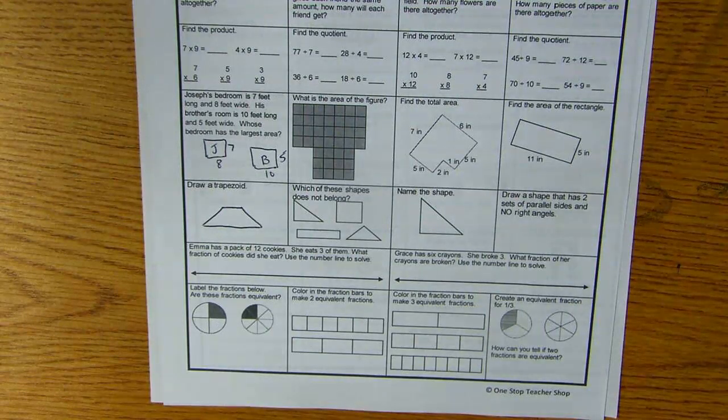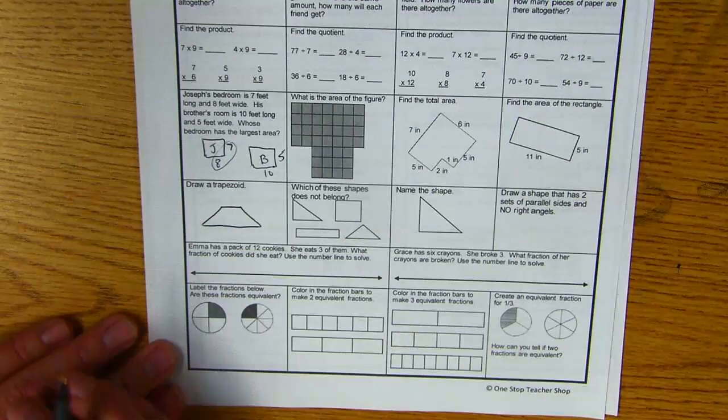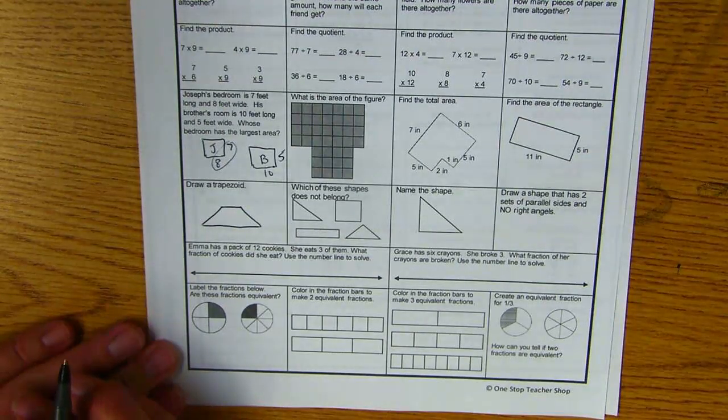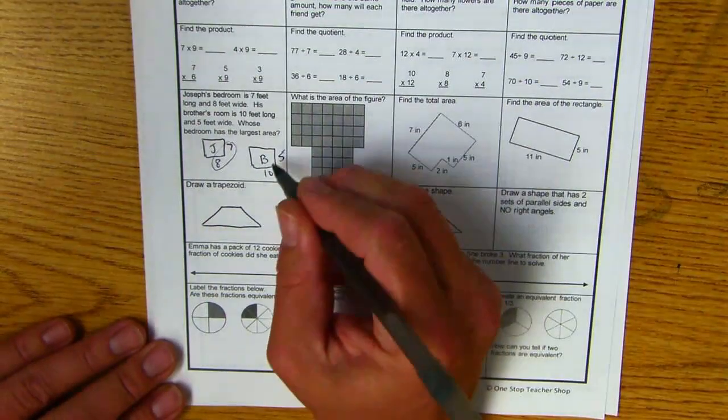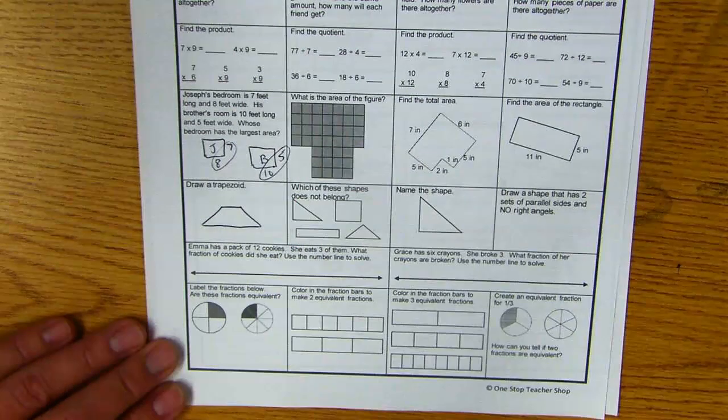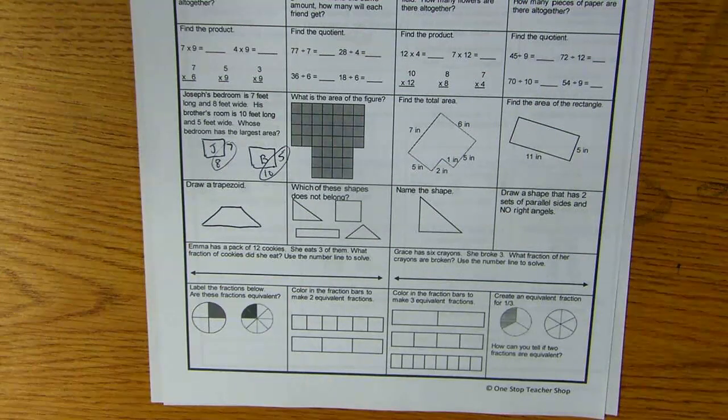Whose bedroom is the largest? In order to figure this out, you need to multiply eight times seven. That's going to tell you the area of Joseph's. To figure out the area of the brother, you have to multiply ten times five. You should be able to figure out which one is larger.